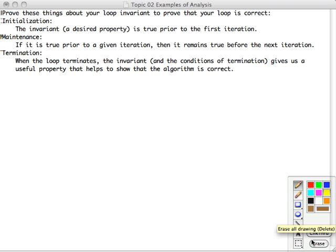Here they are. The loop invariant will be a desired property that if it's true when the loop ends, then the algorithm has done the right thing. We first show that the invariant is true prior to the first iteration. Then we show that if it's true prior to any given iteration, then it remains true before the next iteration. In other words, each pass through the loop maintains that condition.